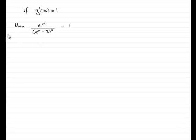Now, for the last part of this question, we're told that if g'(x) equals 1, we've got to find the exact value of x. Well, in the previous part of the question, we worked out that g'(x) was e^x over (e^x - 2)^2. So that's going to equal 1.